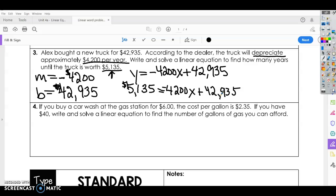So you need to subtract 42,935 from both sides because we're trying to solve for x. We want to get x by itself to figure out how many years we need to do this. So subtract 42,000 from both sides. When you do that, you're going to get negative 37,800 is equal to the negative 4,200x.